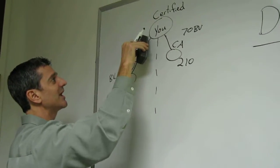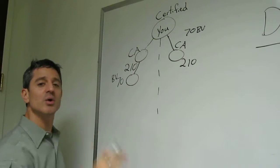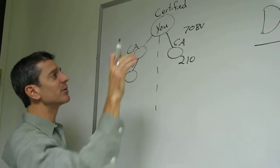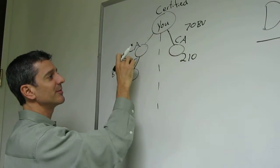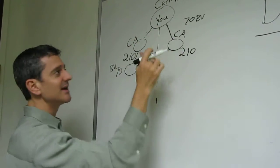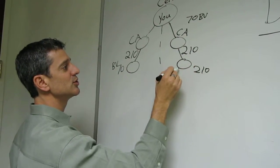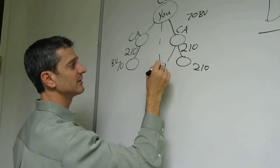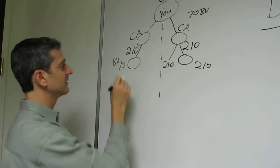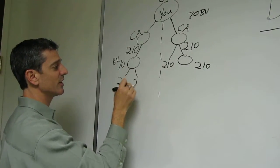So, to duplicate effectively, all you want to focus on is bringing in two certified affiliates that are going to be worth 210 BV points, teaching them to bring in two certified affiliates that are worth 210, and so on, and so on.